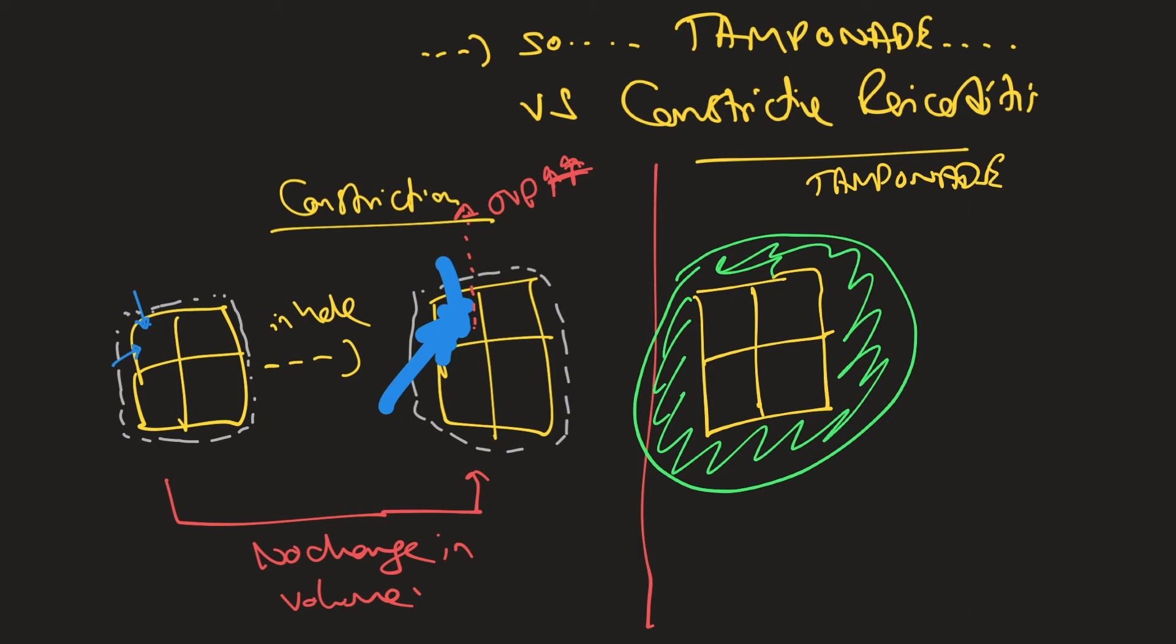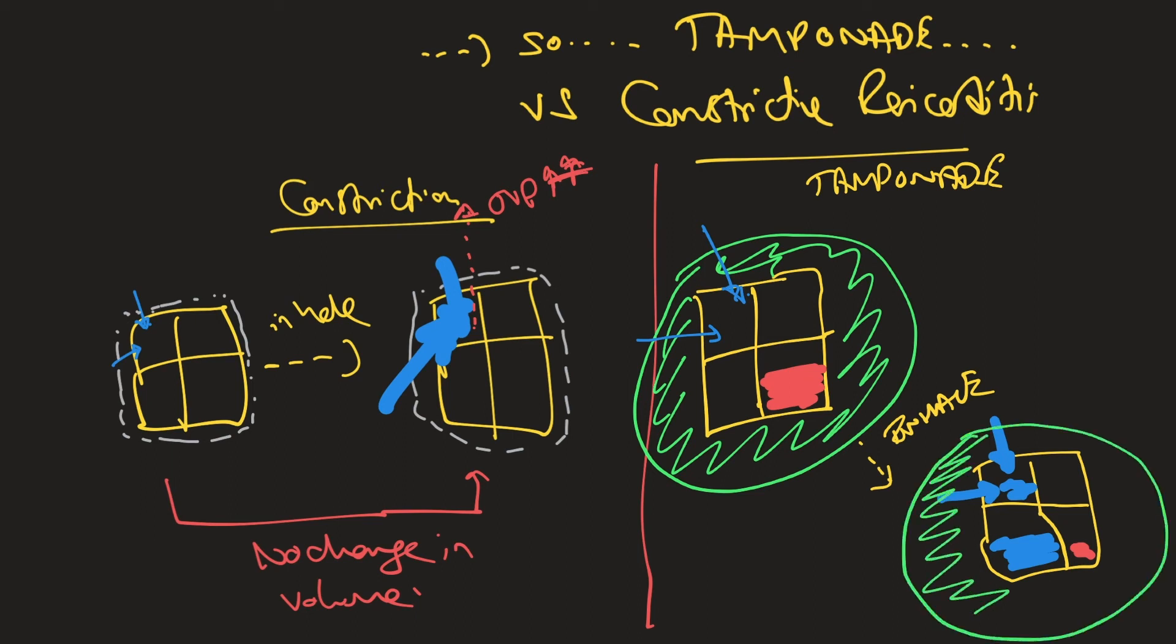So what ends up happening in tamponade is that instead of your heart being isolated from the pressure inside your chest, it becomes even more susceptible to it. So when you take a deep breath in in tamponade, not only do you get increased blood entering the right atrium, that blood then enters the right ventricle and the pressures transmit so readily inside the heart that your right ventricle tries to increase in size. But of course, you've got a bag of fluid around the heart, which prevents it from expanding outwards.